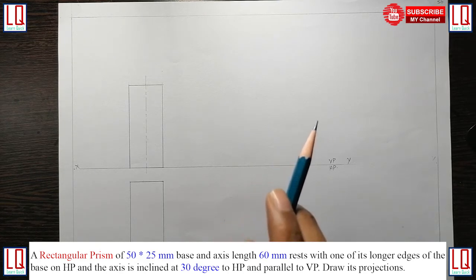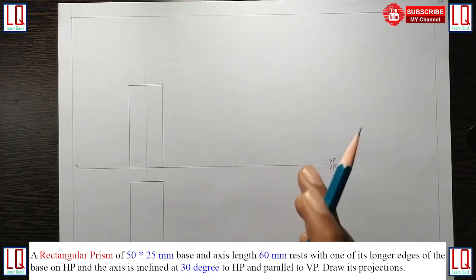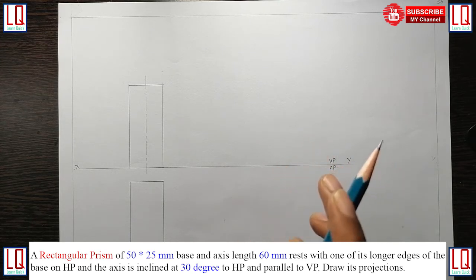First, we will divide this problem statement into three parts. Part 1, a rectangular prism 50 x 25 mm base and axis length 60 mm.